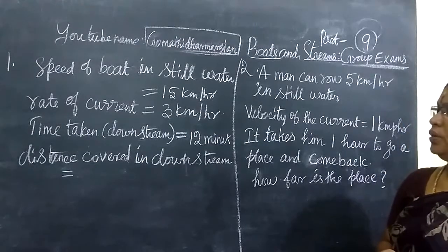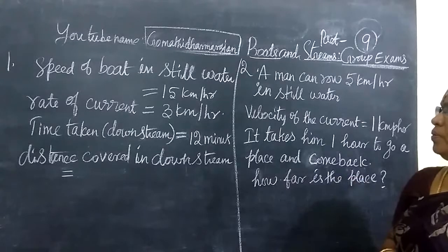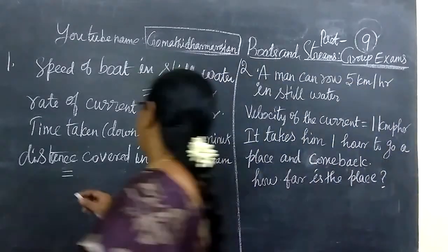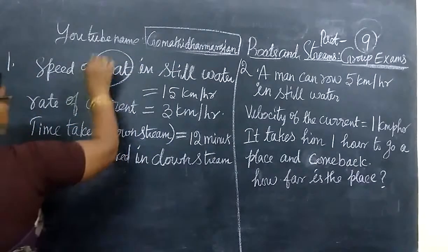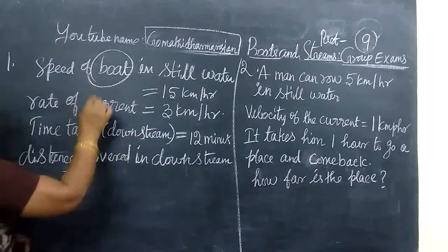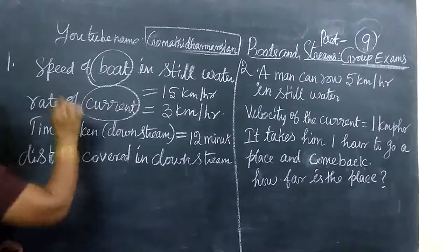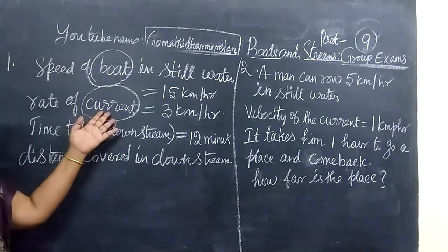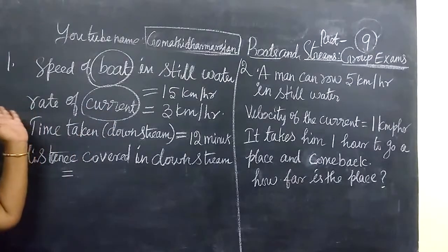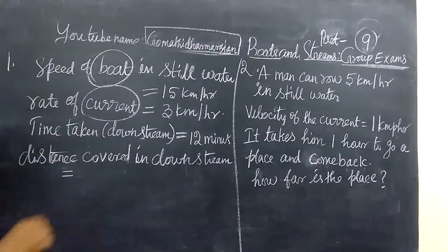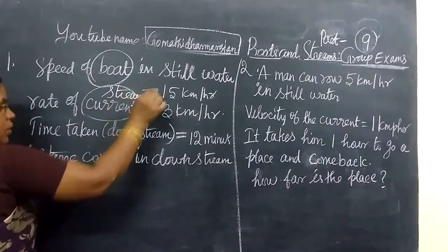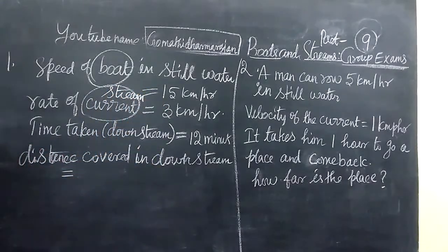We see the first question. Here it is given speed of boat in still water equals 15 km per hour. Rate of current, speed of the stream, this is 3 km per hour.